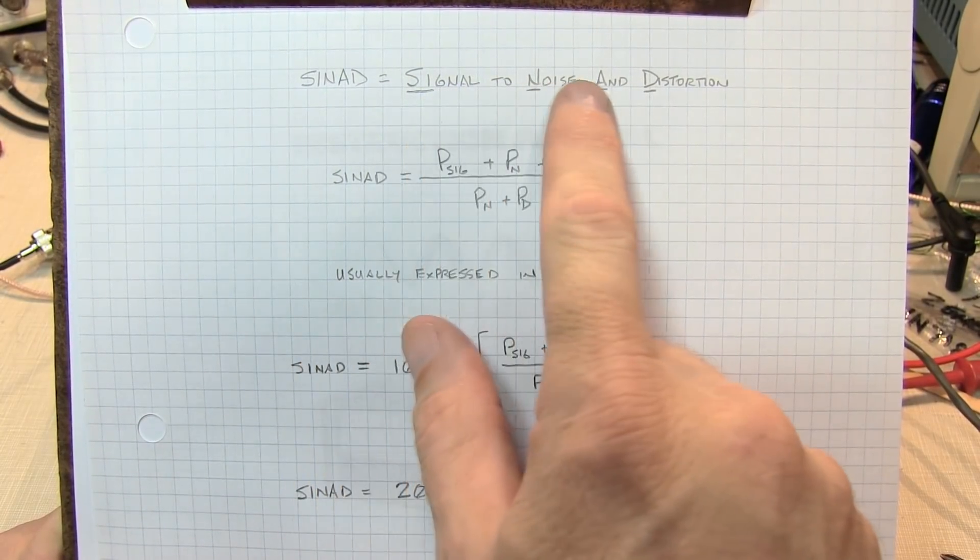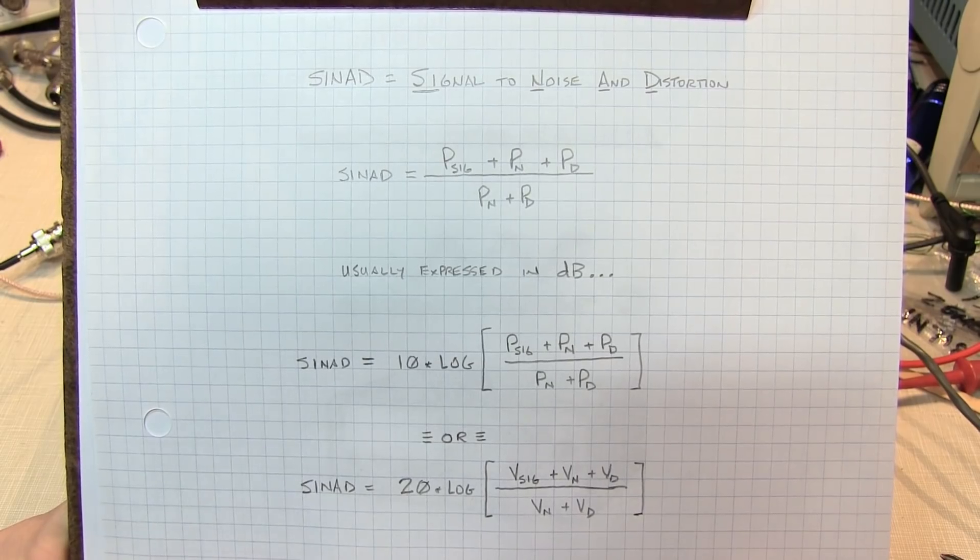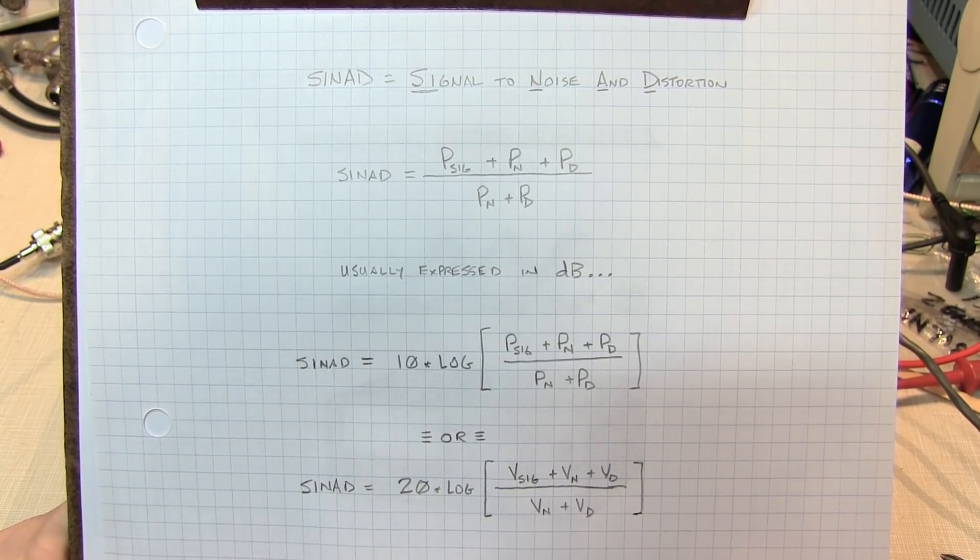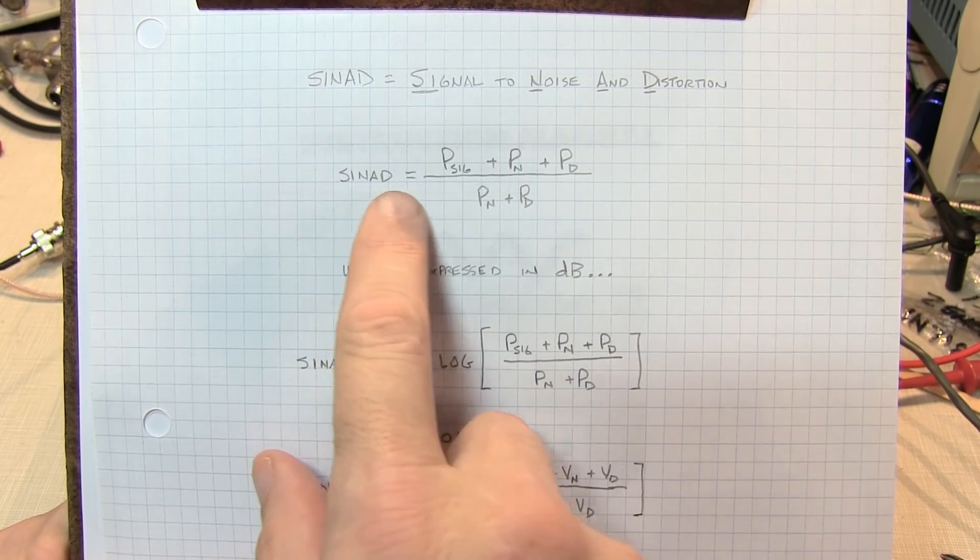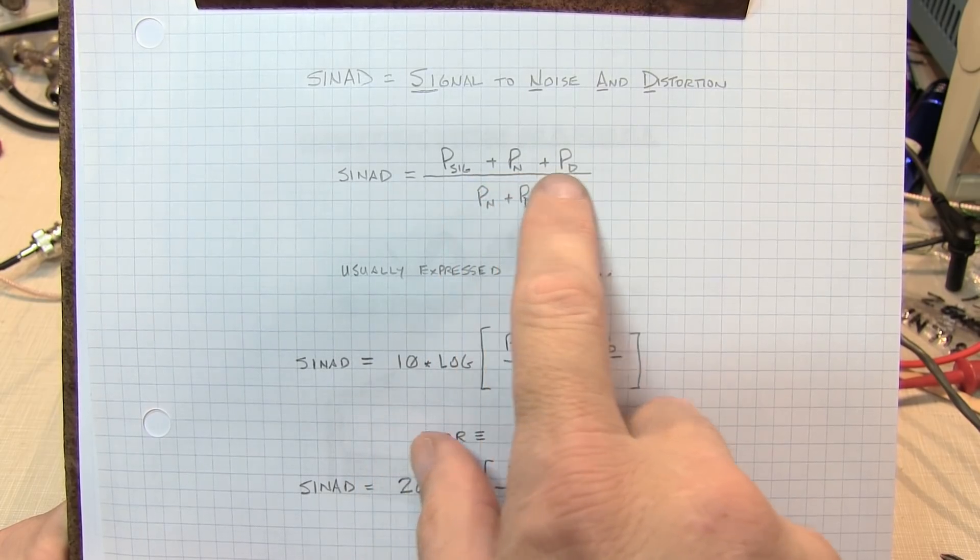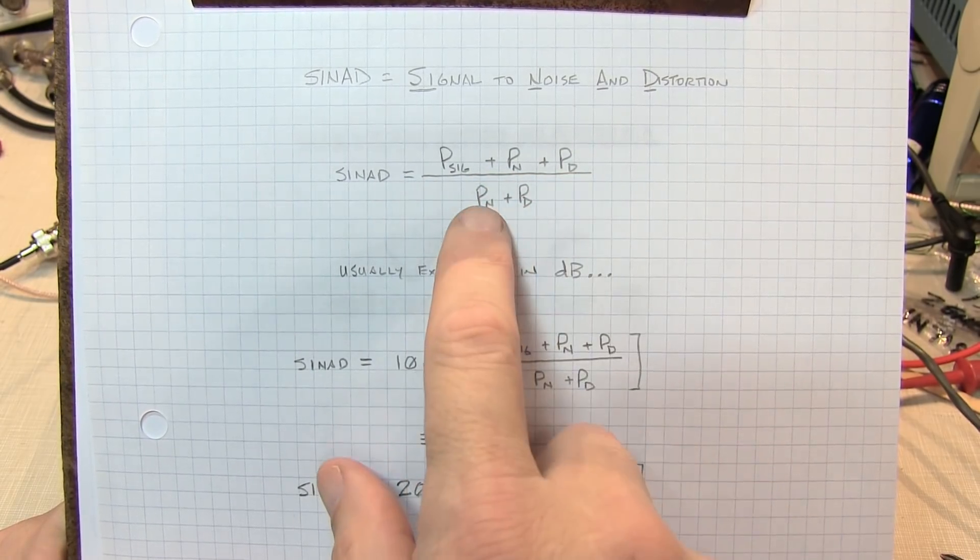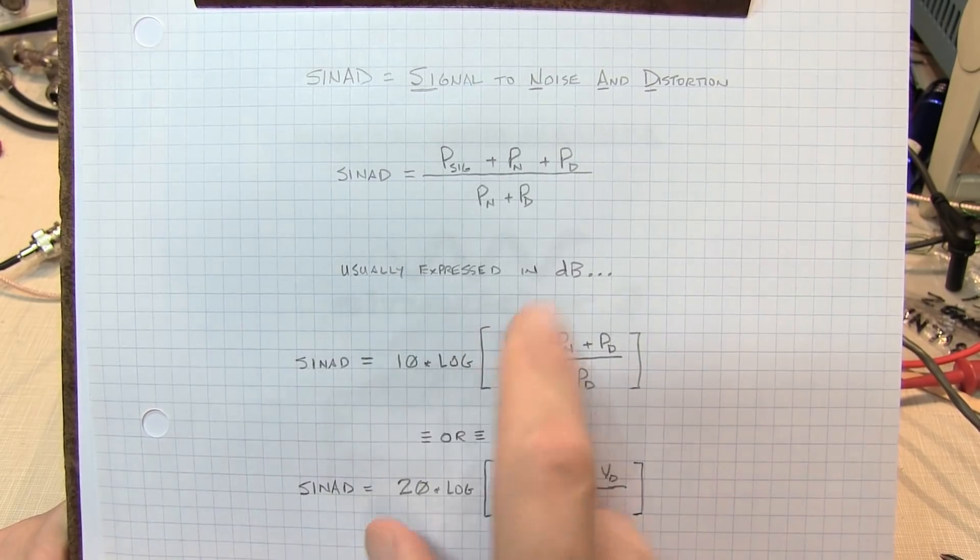SINAD stands for signal-to-noise and distortion, and it's often a measure that's used to characterize the sensitivity of particularly FM radio receivers. What it stands for is the ratio of the power in the signal and the noise and the distortion compared to just the noise and distortion, minus the signal itself. It's usually expressed in dB.